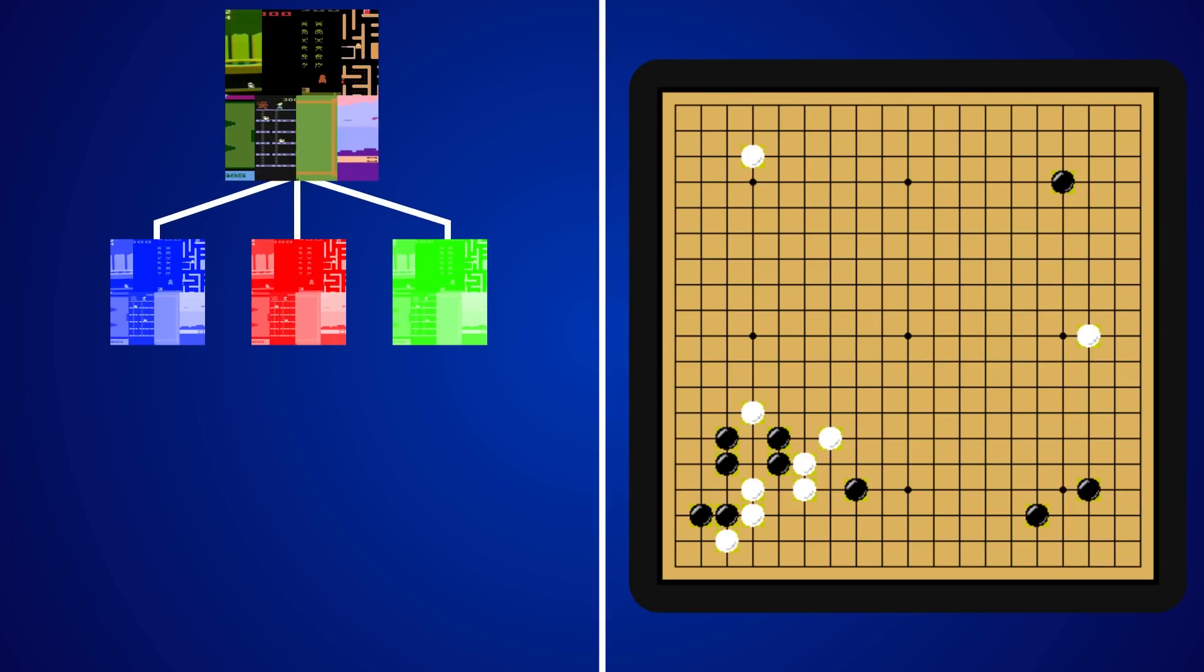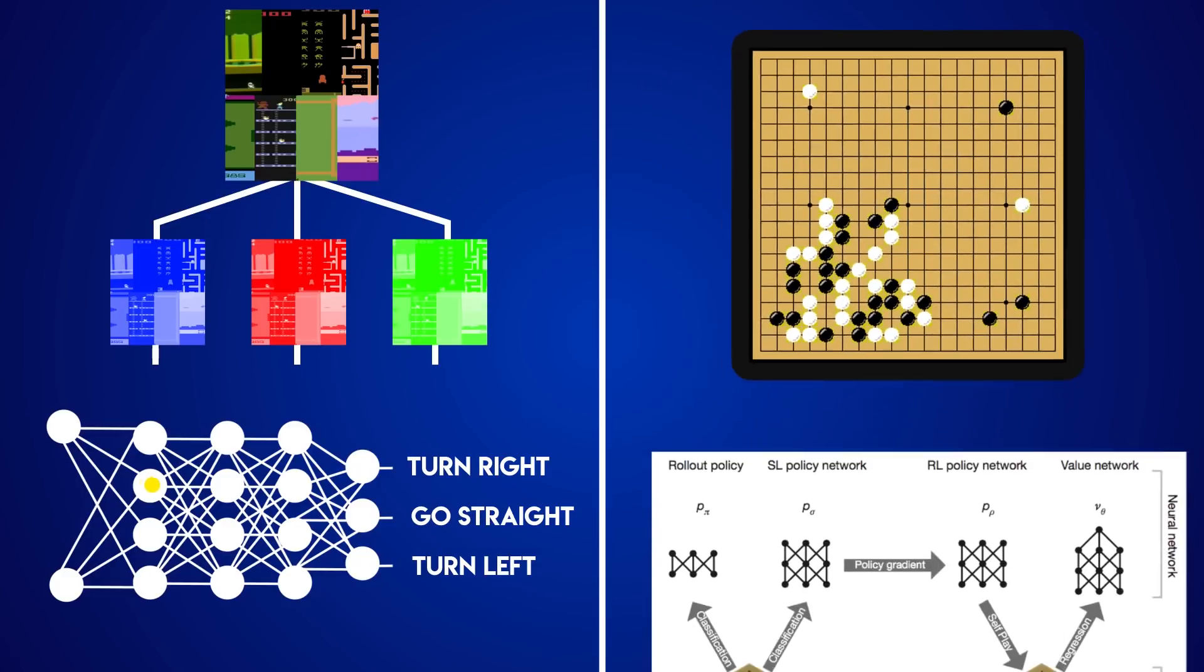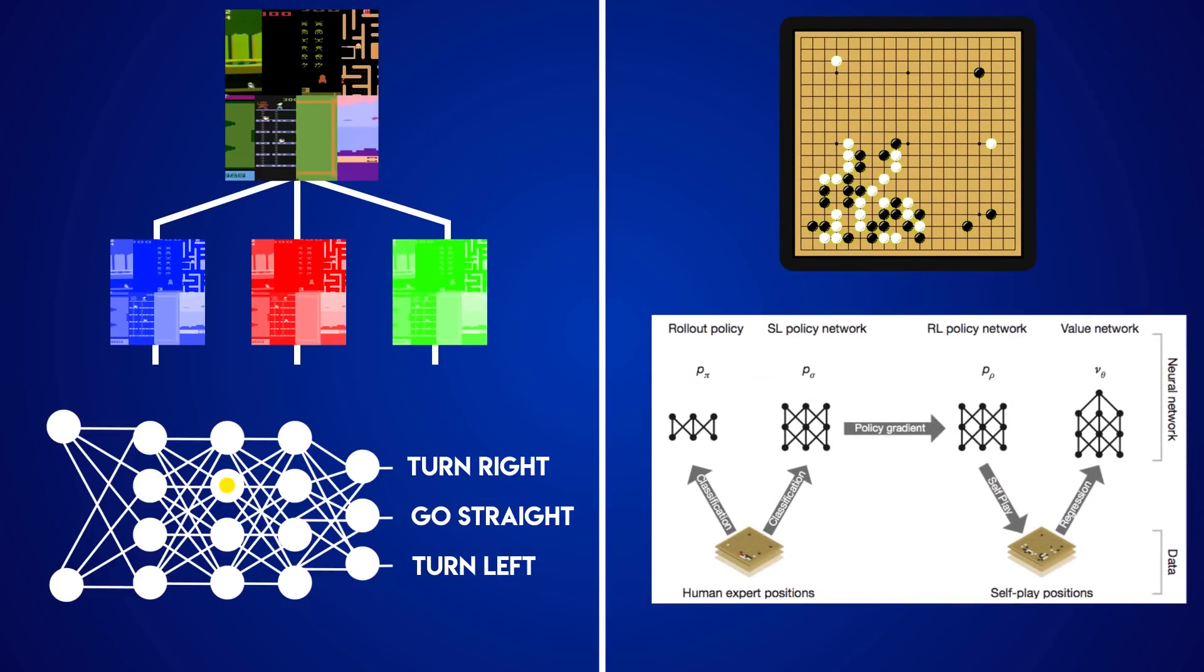The deep Q learner that beat the Atari games just used a standard Q learning algorithm with function approximation and you can find an example of that from the standard RL book by Sutton in 1998 as well as a convolutional net which has been around since the 1990s. AlphaGo used a strategy called a Monte Carlo tree search as well as something called a policy gradients approach. All of these are standard well-known components.